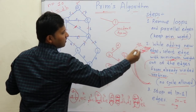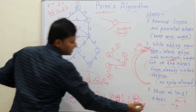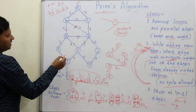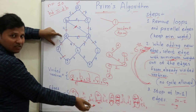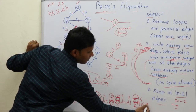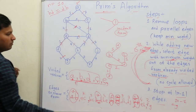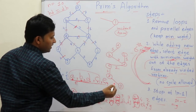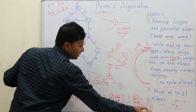Now for the sixth edge, we add edges incident on F to the set. FE is already visited, so only FG is added with weight 2. From the current set, FG is the minimum. We add FG to the spanning tree with weight 2. G is added to the visited vertices set and FG is deleted from the set.